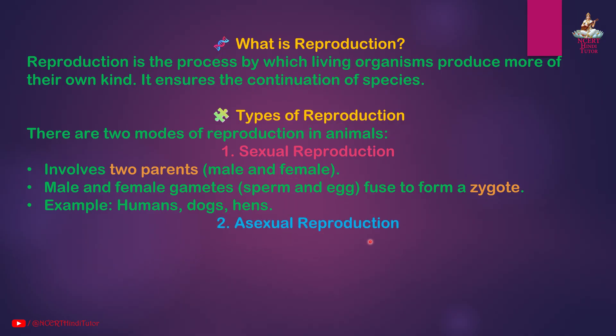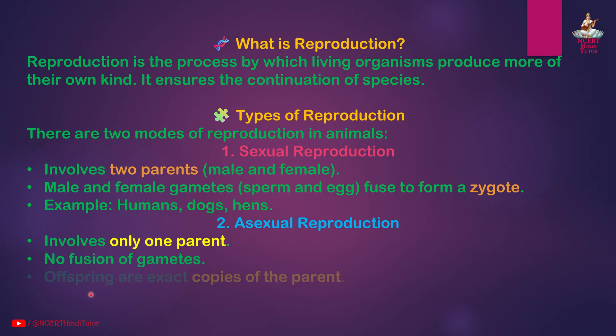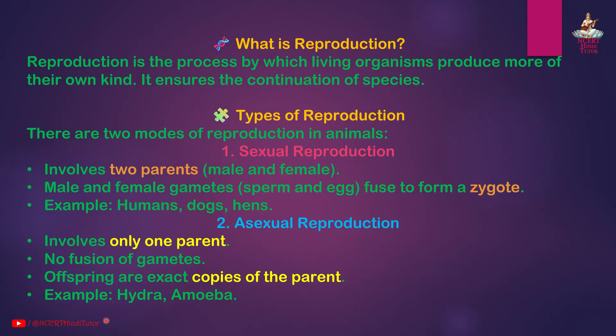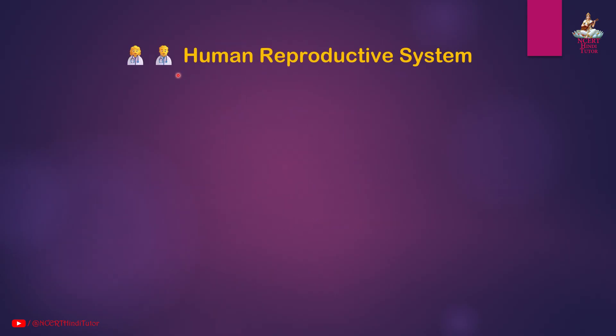Second, asexual reproduction involves only one parent, with no fusion of gametes. The offspring are exact copies of the parent. Examples: Hydra, amoeba.